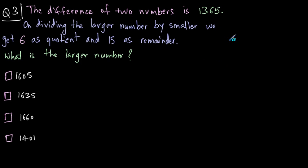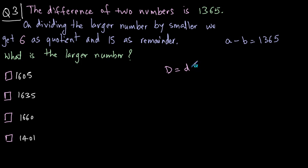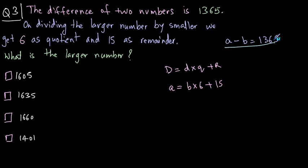Question three: we are given the difference of two numbers. Let the numbers be a and b. We get a minus b equals 1365. On dividing the larger number by the smaller number we get 6 as quotient and 15 as remainder. Let a be the larger number and b the smaller. Dividing a by b using the division formula: a equals b into 6 plus 15.